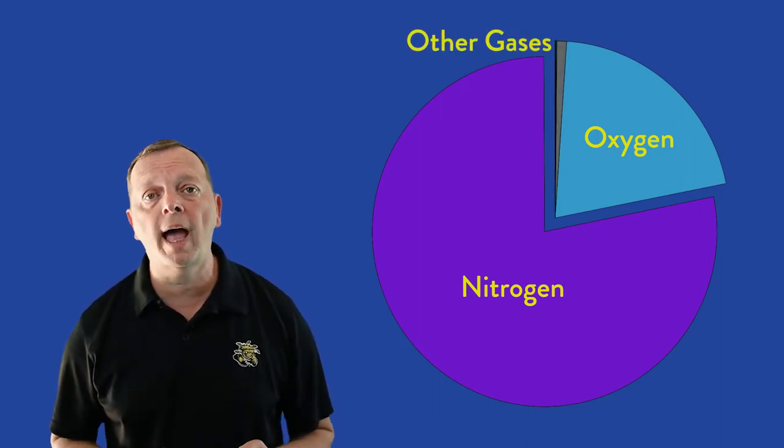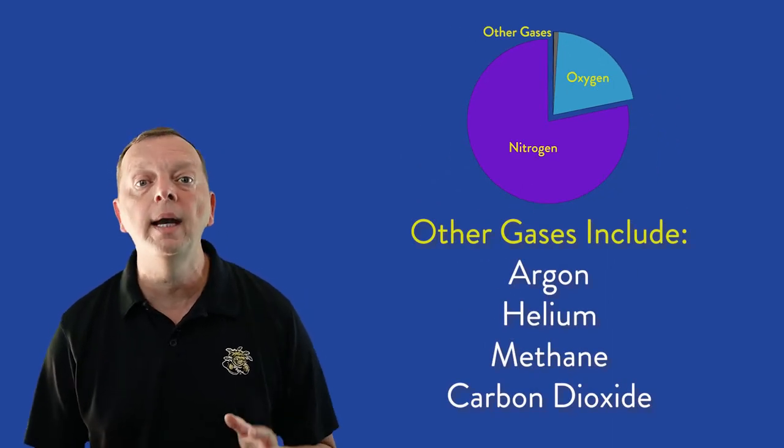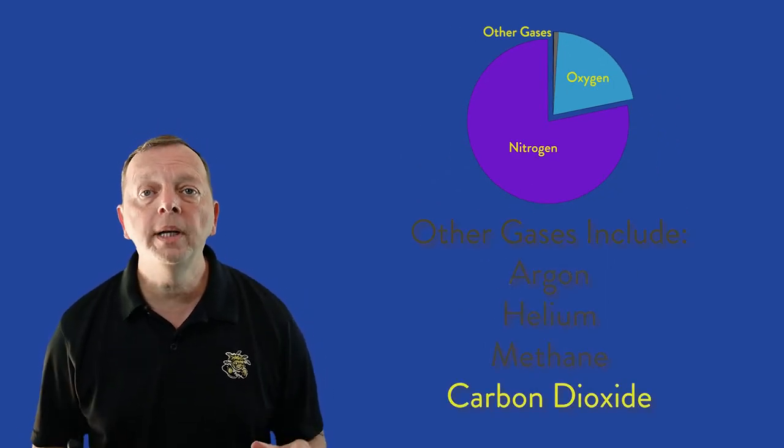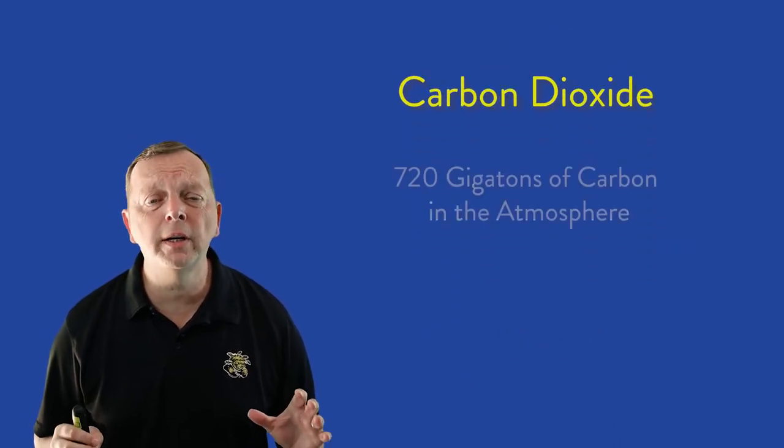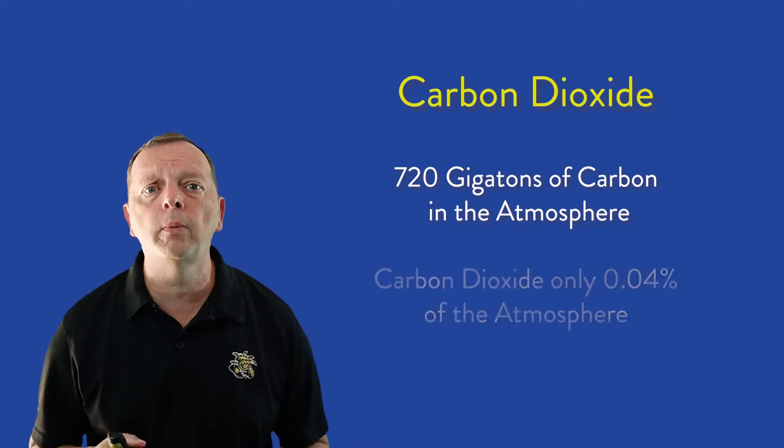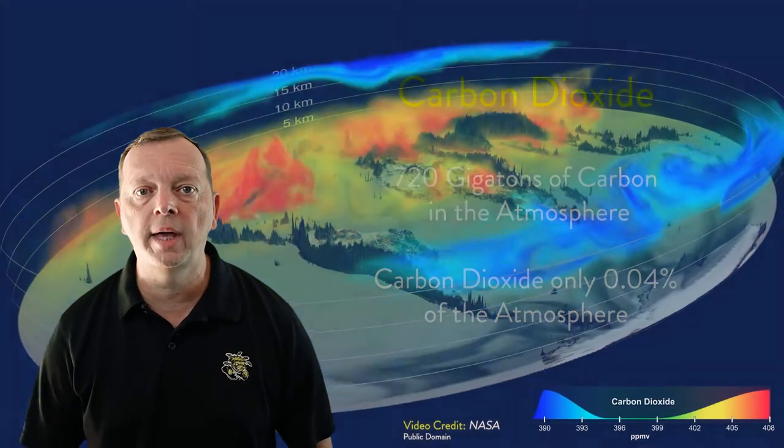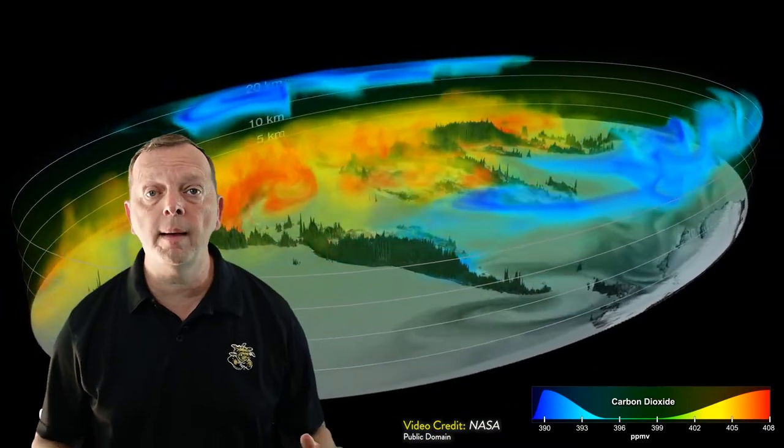Now, the remaining 1% of the atmosphere is made up of other gases, such as argon, helium, methane, and carbon dioxide. Carbon dioxide is the reason there is about 720 gigatons of carbon in our atmosphere, even though it represents only 4 one-hundredths of a percent of the atmosphere's gases. It is this carbon from the atmosphere that is the backbone of all life on Earth through something known as the carbon cycle.